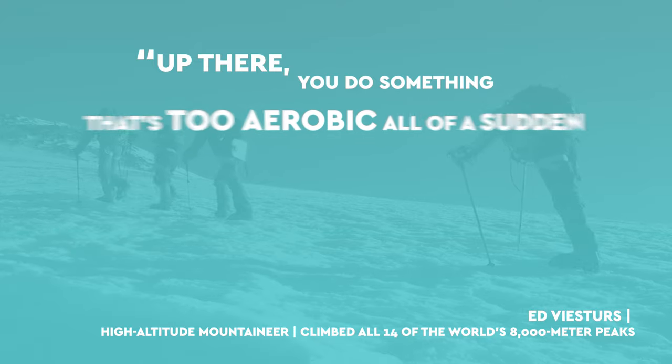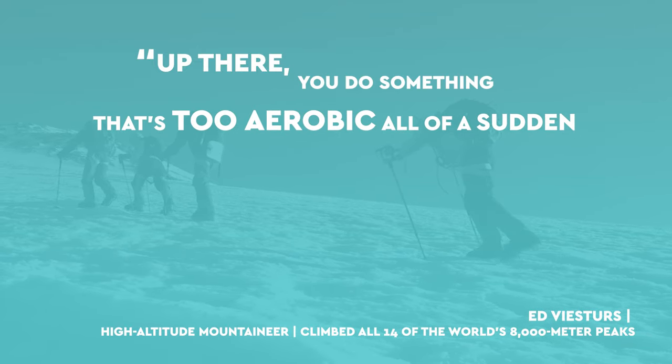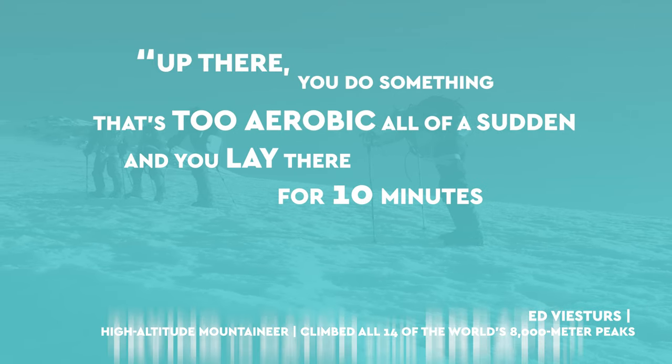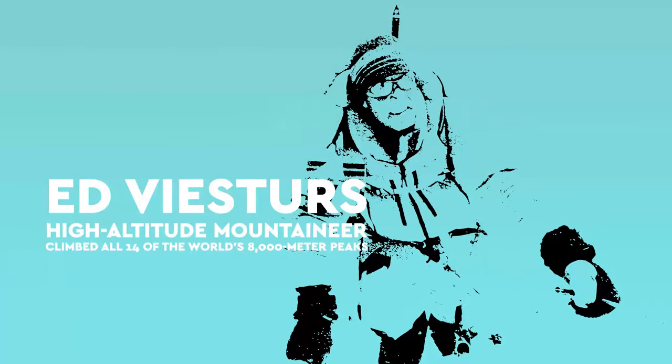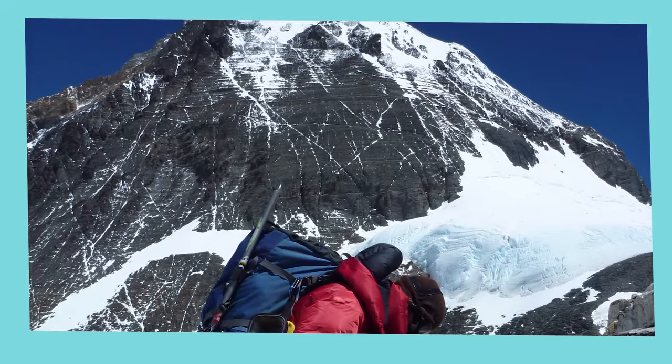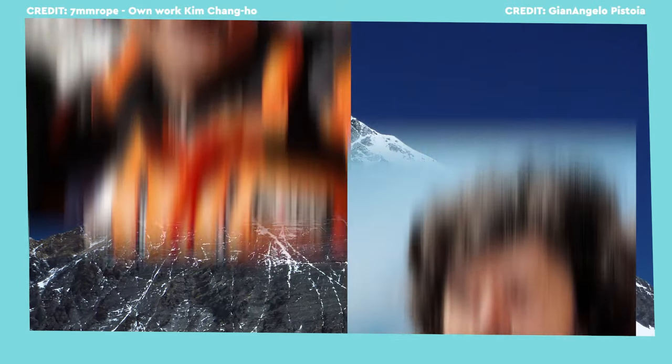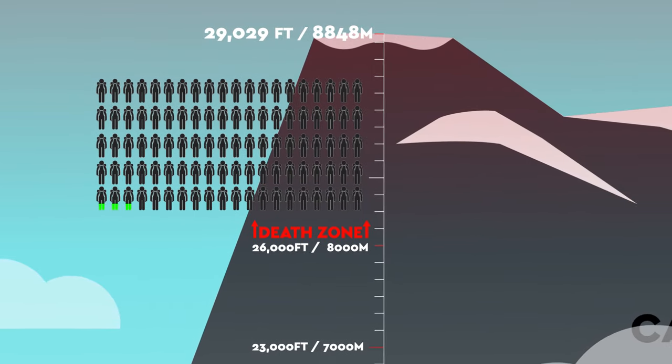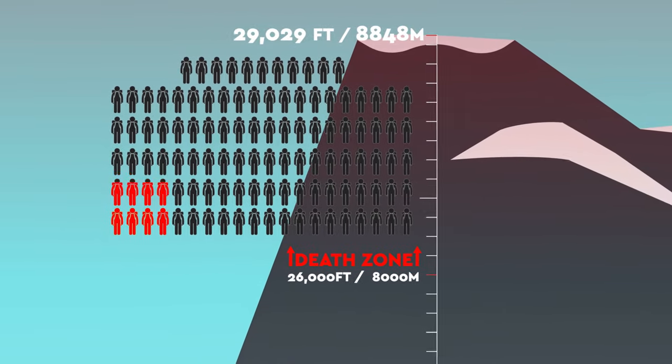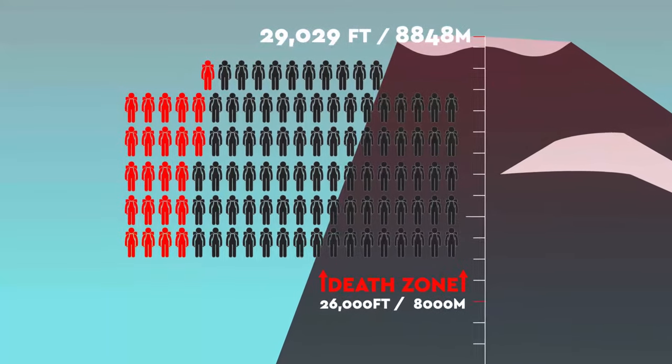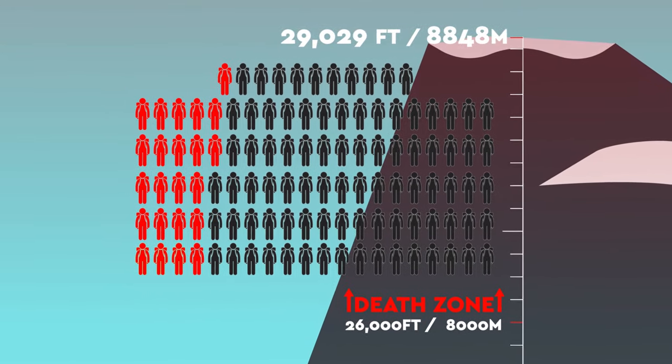Up there, you do something that's too aerobic all of a sudden, and you lay there for 10 minutes trying to catch your breath. Ed Viesturs, who has climbed all 14 of the world's highest mountains above the death zone mark, is one of only around 200 people to have ever summited Everest without supplemental oxygen. This elite club accounts for only 3% of the total Everest summits, but 22% of the 111 deaths that have occurred above 26,000 feet.